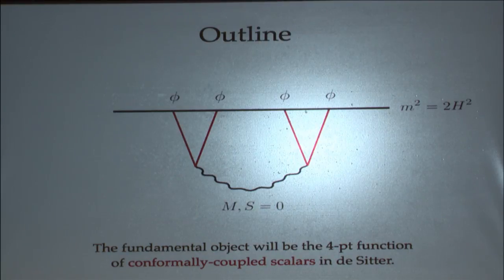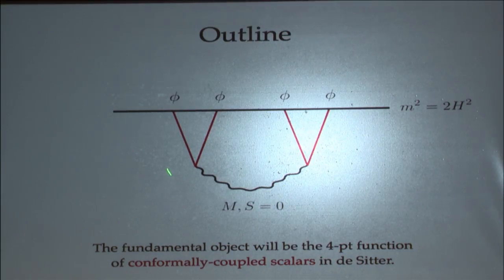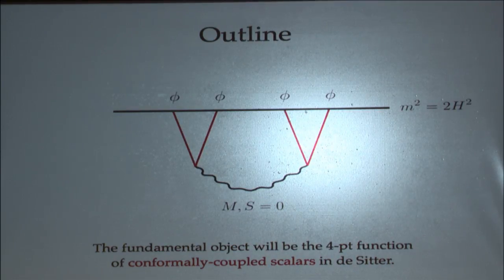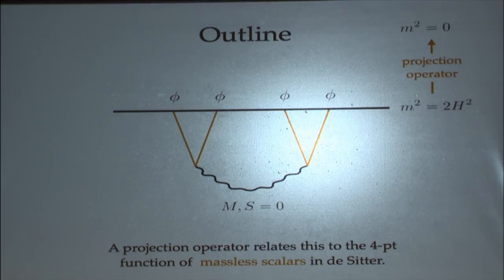The fundamental object we study is a four-point function of scalar fields — conformally coupled scalars where the mass takes a specific value, namely twice the Hubble scale squared — with an exchange of a massive particle with spin zero that can have any mass. We study this four-point function in pure de Sitter space. We'll then show that this four-point function is related by a projection operator to the case of massless or nearly massless external fields, which is what we care about in inflation where these external scalars might become the inflaton.